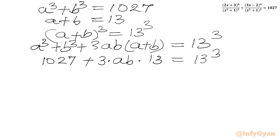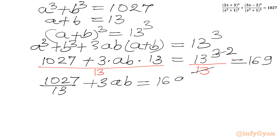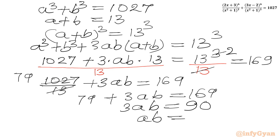Now we divide our equation by 13, as it is divisible by 13. The RHS becomes 13² = 169. So we write 1027/13 + 3ab = 169, which gives us 79 + 3ab = 169. Subtracting 79 from both sides, we get 3ab = 90, or ab = 30.